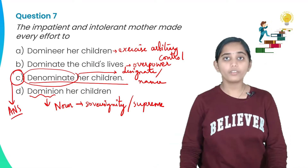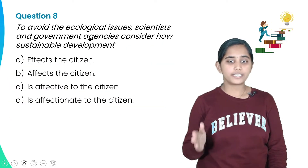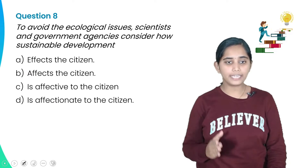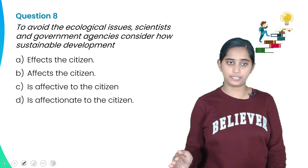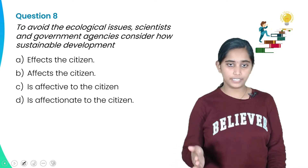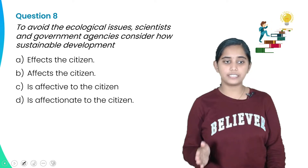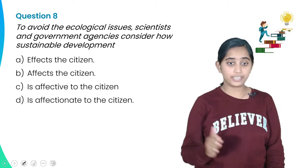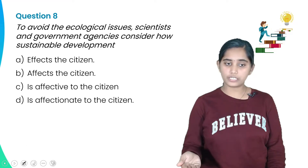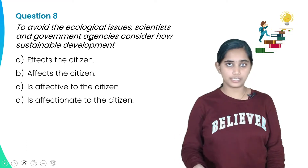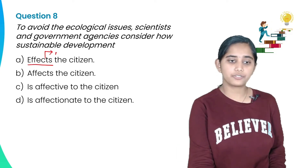Moving on to the next question: 'To avoid the ecological issues, scientists and government agencies consider how sustainable development dash the citizen.' Options: A) affects the citizen, B) is affective to the citizen, C) is affectionate to the citizen. The answer is 'affects the citizen.' Note that 'effect' used as a noun means a result.